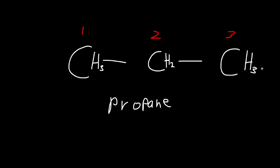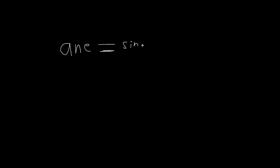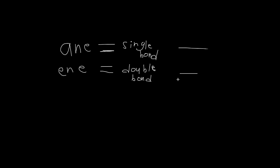That was for single bonds — a single bond has the ending '-ane,' meaning just a straight line. Now, if the ending was '-ene,' this would mean a double bond — two lines. And there's one more: if the ending has '-yne,' this would be called a triple bond, having three lines.